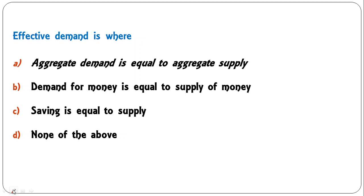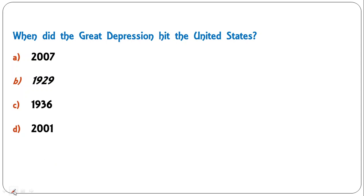Next question: effective demand is where aggregate demand equals aggregate supply, demand for money equals supply of money, saving equals supply, or none of the above? The correct answer is A — effective demand is a situation where aggregate demand is equal to aggregate supply.